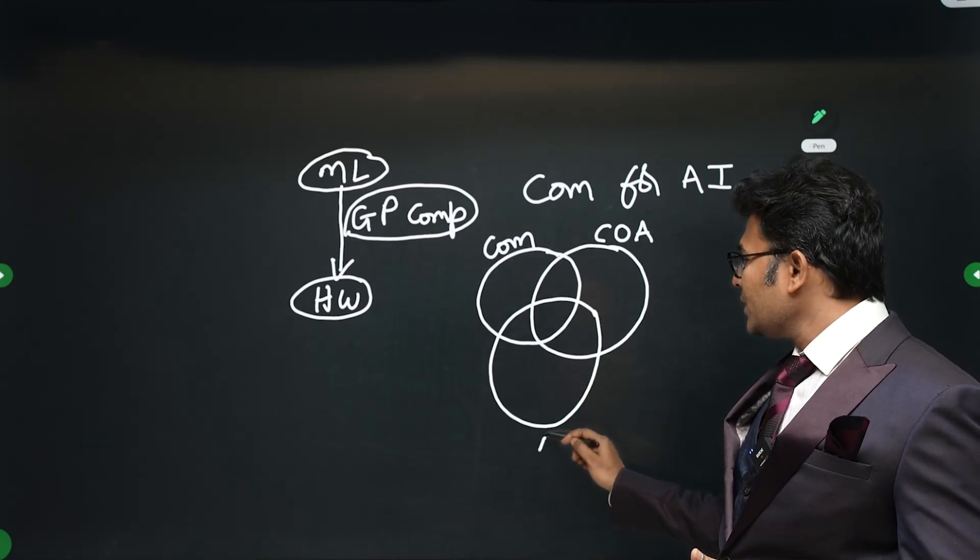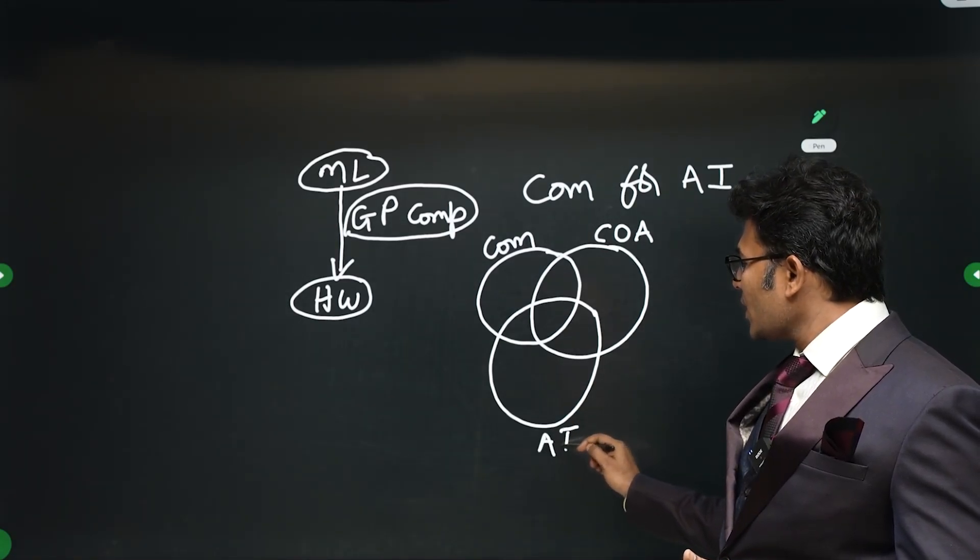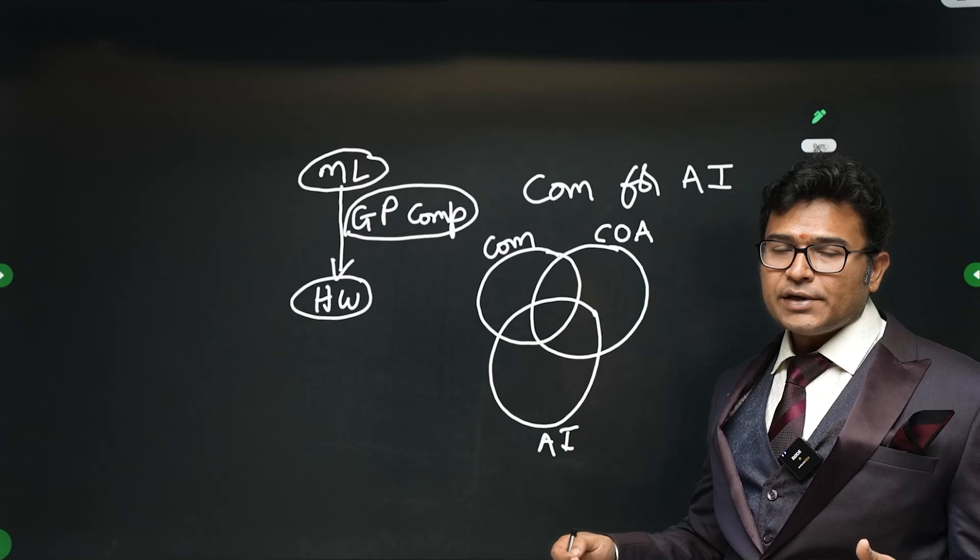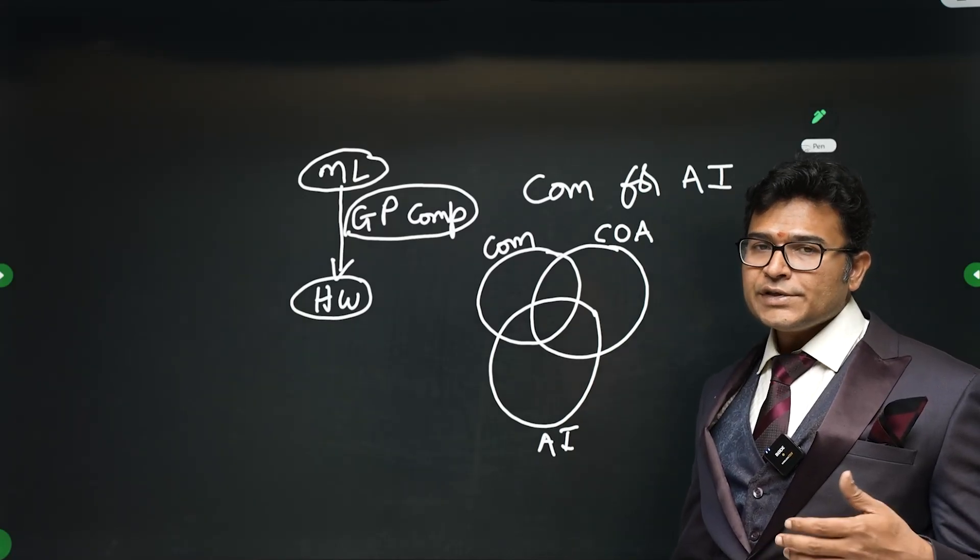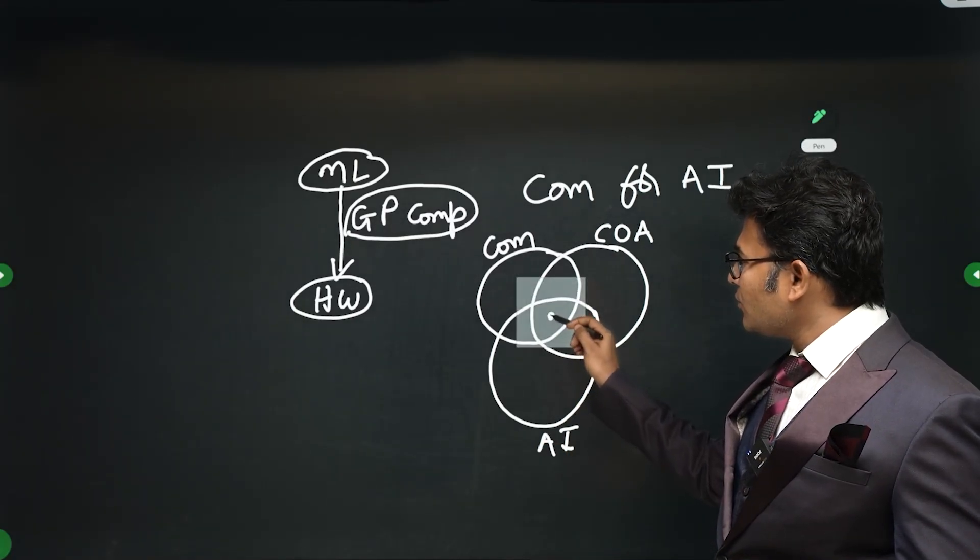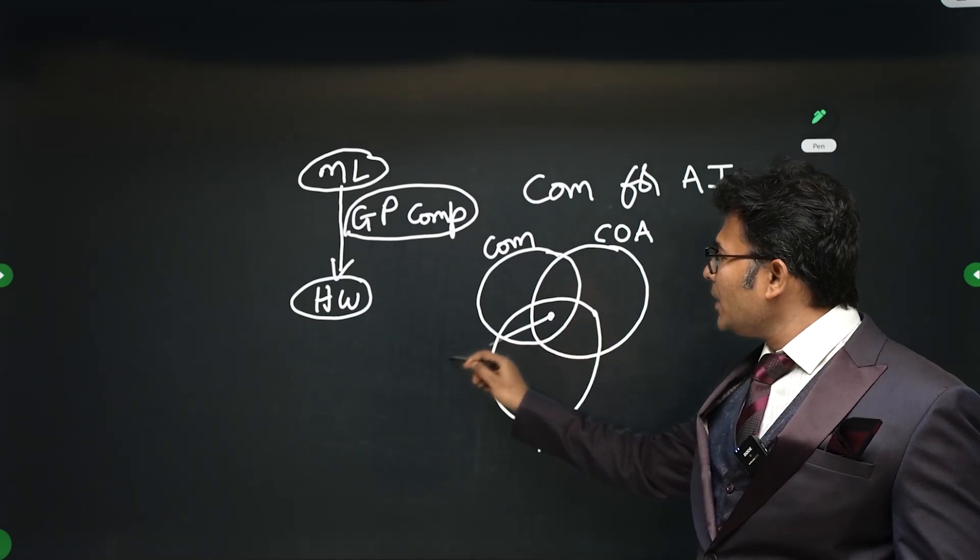This is not a class, I'm just telling you the area. One is you need to understand compilers, other is you need to understand CO, and other is you need to understand AI. At the intersection of it will fall the area compilers for AI.